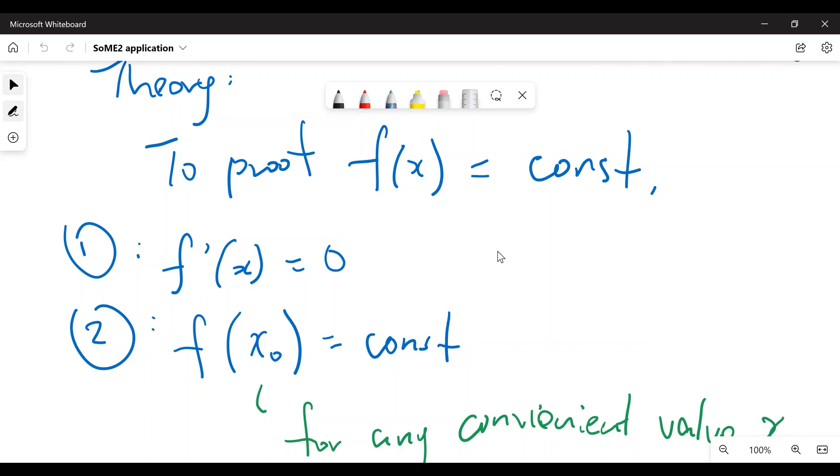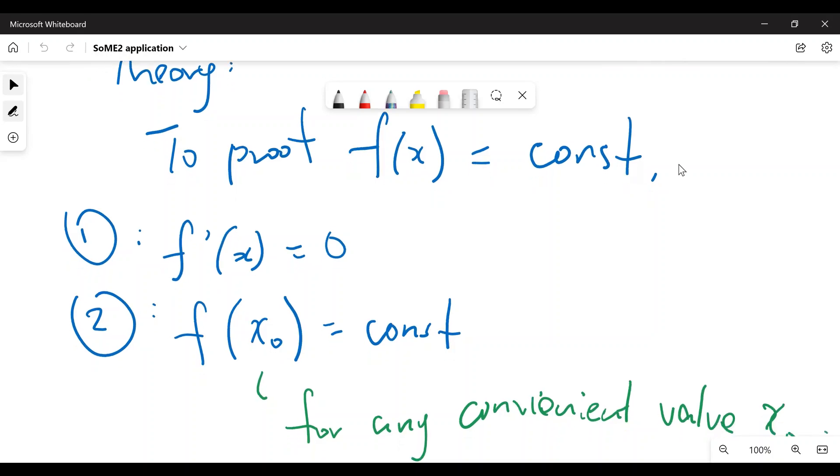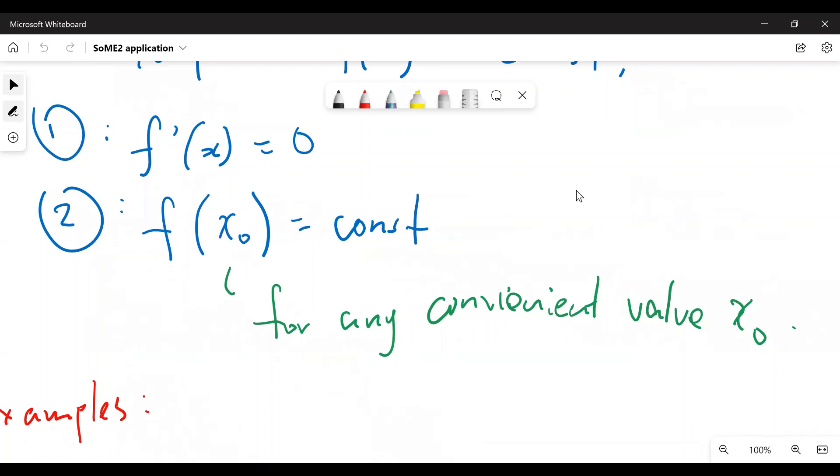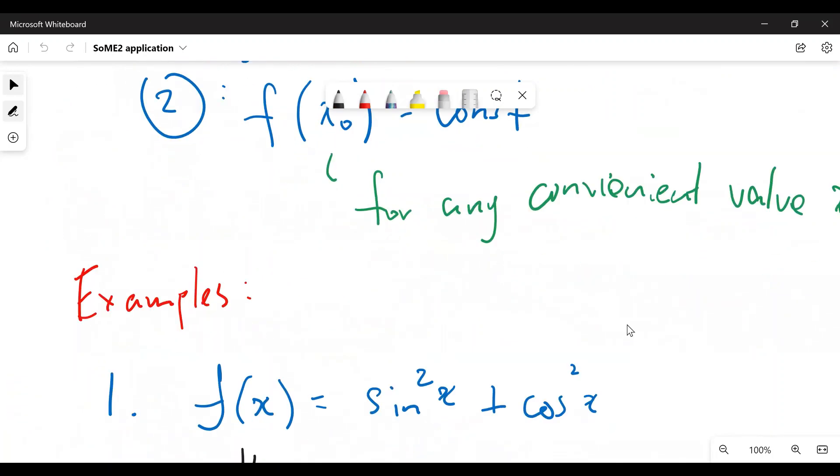And the second thing is you just substitute whatever value you find convenient to find out exactly what that constant is. And then you're done. You've proven the thing. So pretty easy proving technique. So let's just look through some examples.